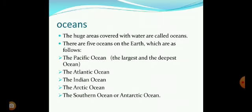Now, oceans: the huge areas covered with water are called oceans. There are five oceans on the earth: the Pacific Ocean, which is the largest and the deepest ocean; the Atlantic Ocean; the Indian Ocean; the Arctic Ocean; and the Southern Ocean, also called the Antarctic Ocean. So these are the five oceans on the earth.